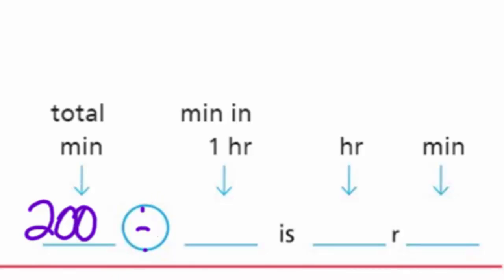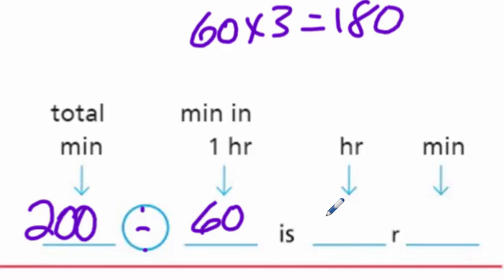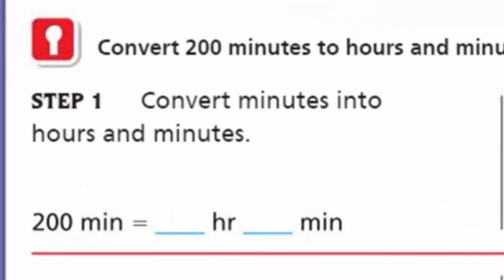We're going to divide by 60 because there are 60 minutes in one hour. 200 divided by 60 - I'd go 60 times 3 equals 180, and that leaves 20 minutes left over as a remainder. So that's 3 hours and 20 minutes. Coming back over here, we have 3 hours and 20 minutes. That was step one!